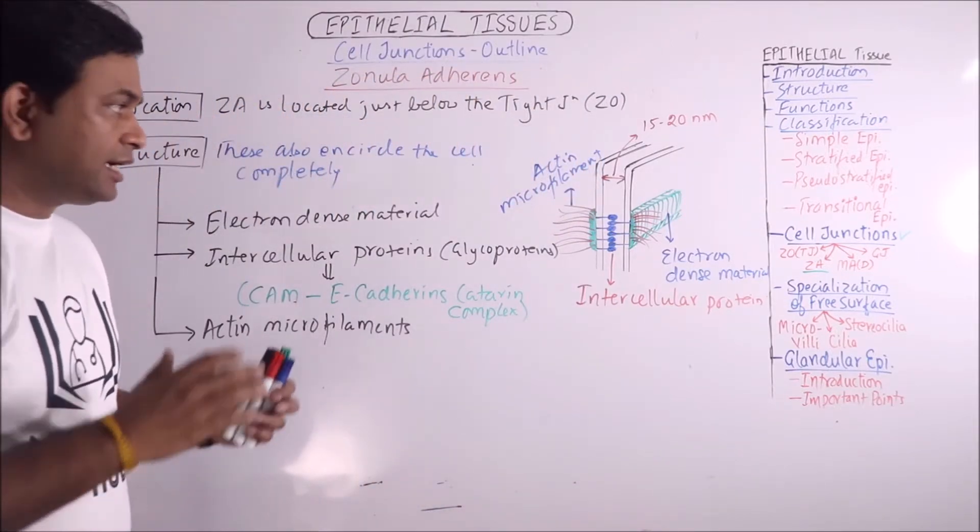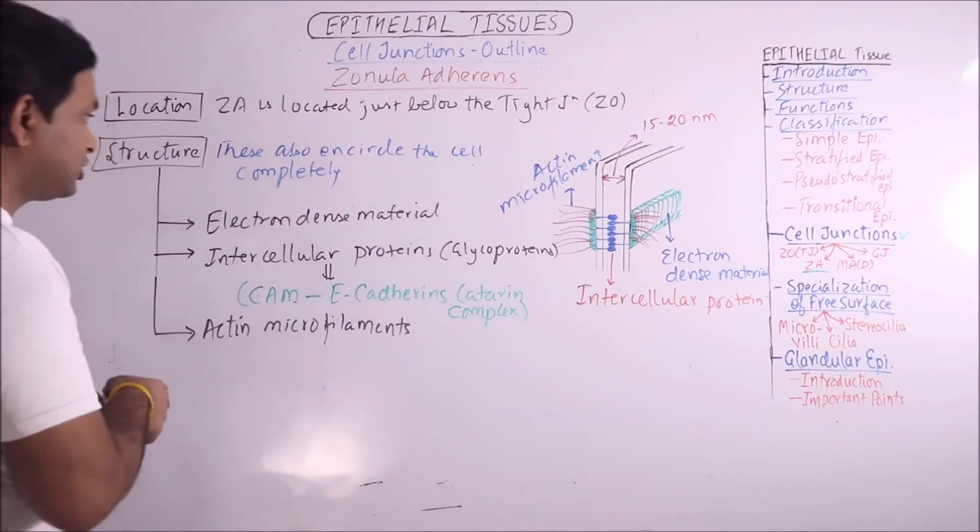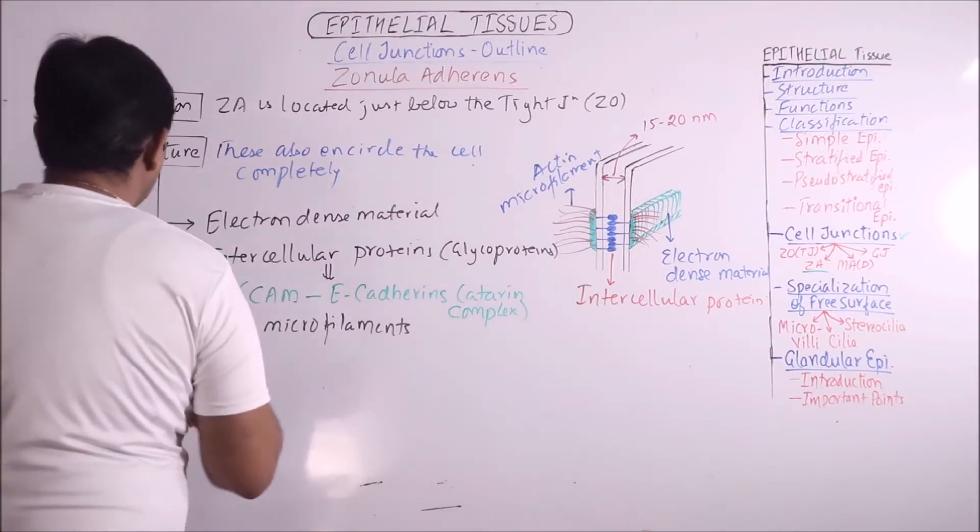So, these basically connect the terminal webs of the two adjacent cells and stabilize that. So, this is the structure of zonula adherence.